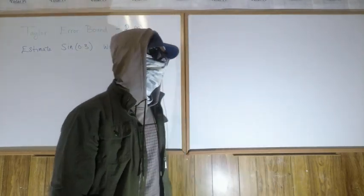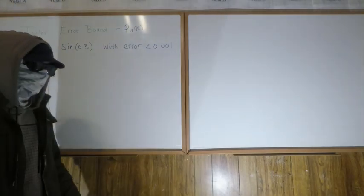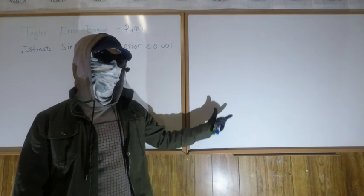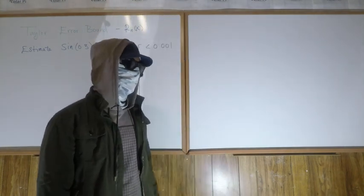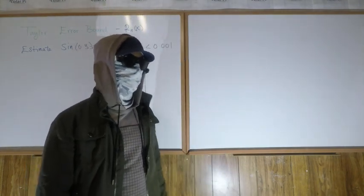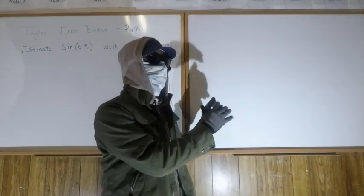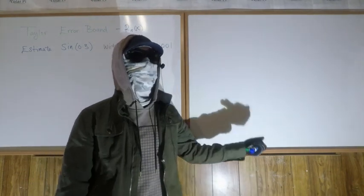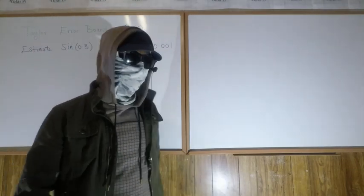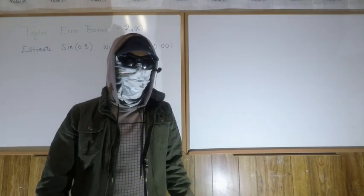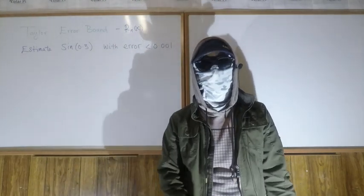In the last video we were doing kind of the opposite of what we're doing here. In the last video we were given so many terms of the cosine Maclaurin series, used it to evaluate cosine of 0.3, and then asked: if we use this many terms, what's the error? This time we're given the error that we need to be limited by, and what we have to do is figure out how many terms of the sine Maclaurin series to use so that the error is less than this.